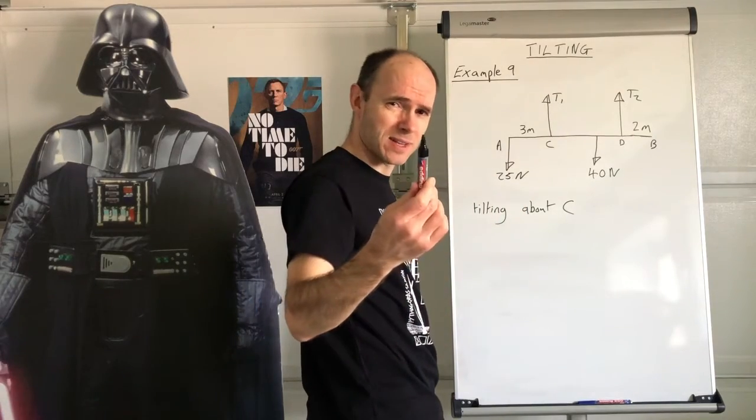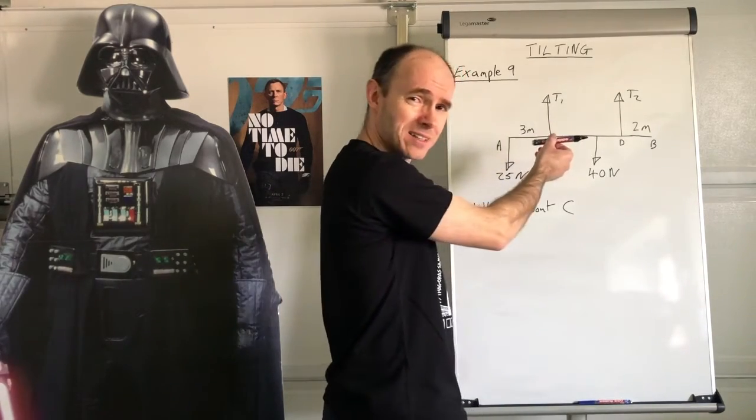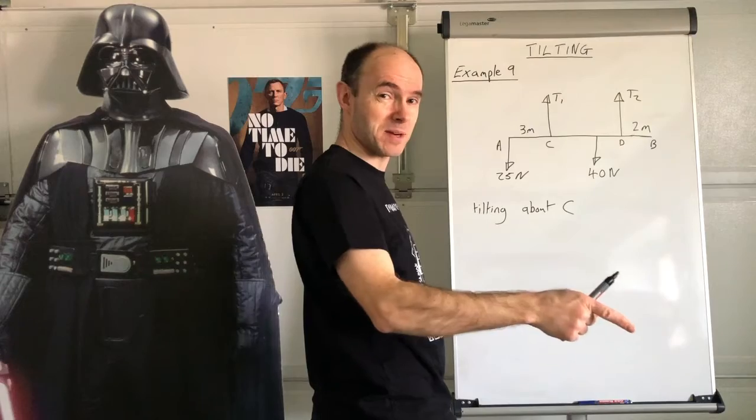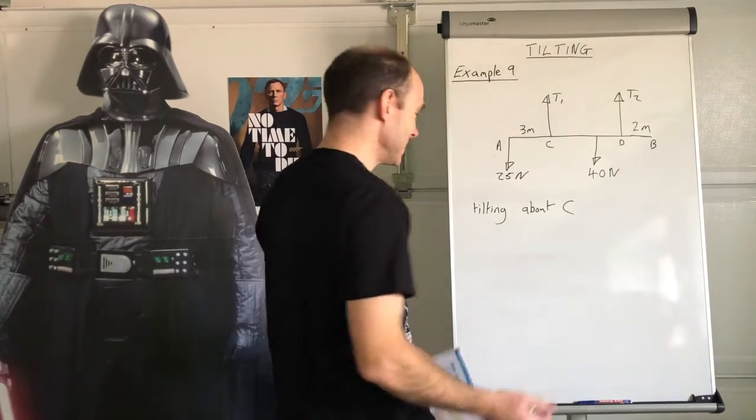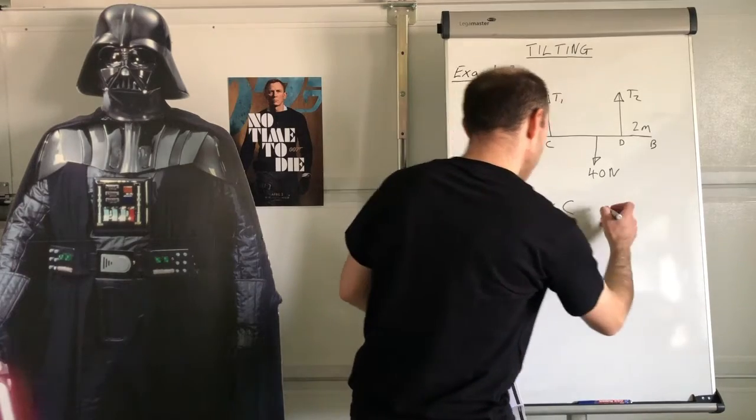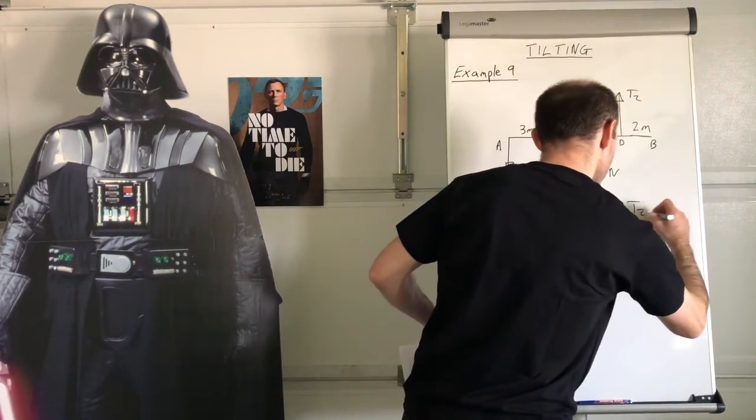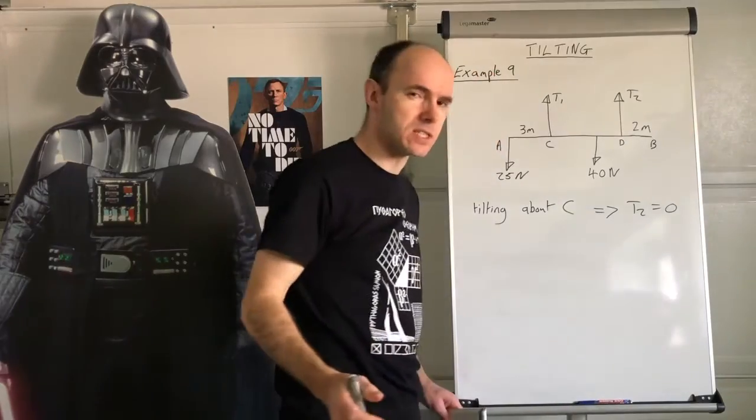This looks pathetic next to a lightsaber, doesn't it? This is what I do in class. But you think I'm taking my lightsaber to school? No. How long would it stay in my classroom, really? So tilting about C, that implies that the tension T2 is equal to zero.